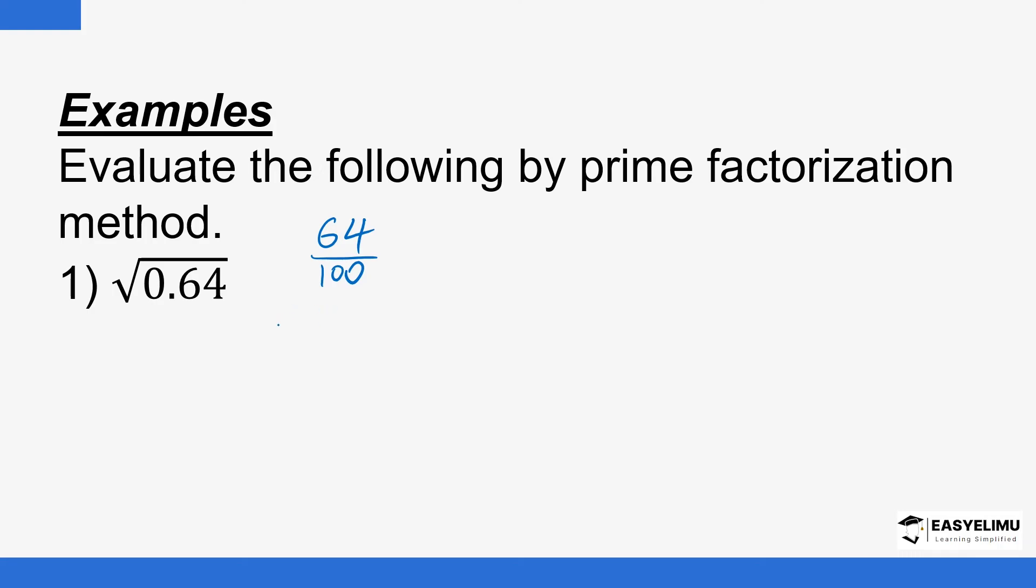So I'll use factor tree method. So I have, I'll start with 64 here. So 64, we have 2 here, going there 32 times. We have 2, 16 times, 2, 8, 2, 4, and finally 2, 2. So these are the prime factors. Let me try 100 here. Again, 2 goes there 50 times, 2, 25, and 5, 5 times. So these are the prime factors.